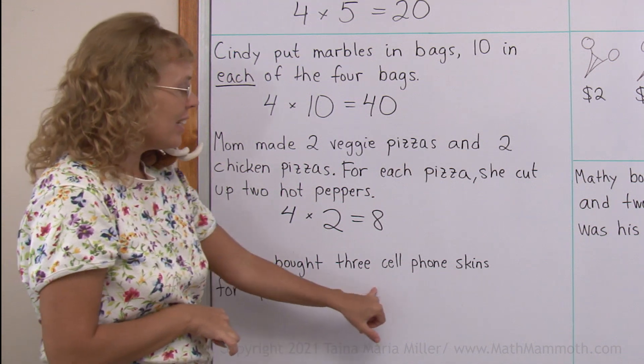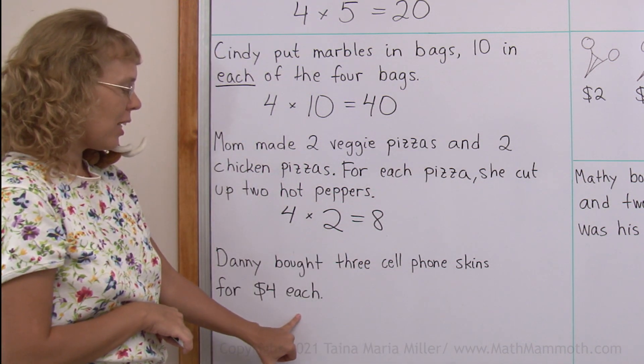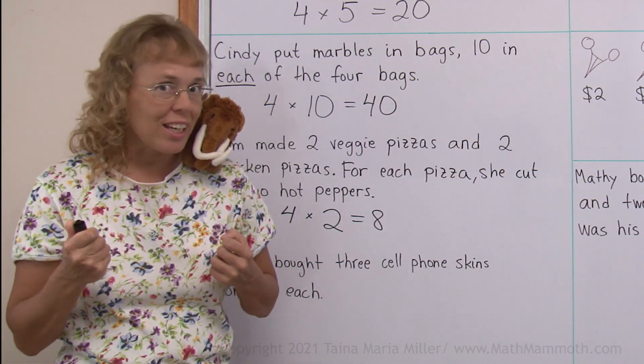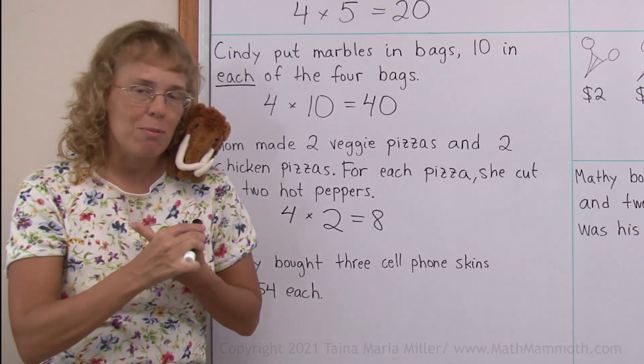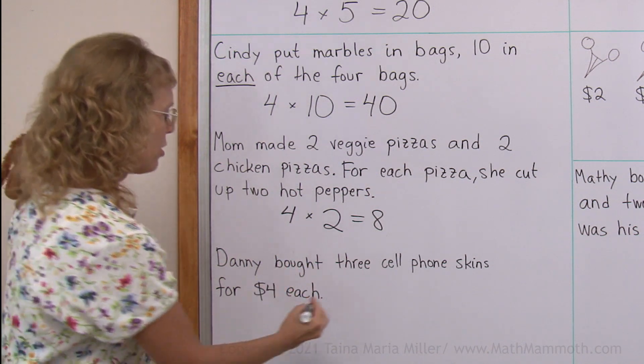Danny bought three cell phone skins for four dollars each. And what would be his total cost? We can use multiplication. There are three things, and they each cost the same amount. So we can multiply to find the total cost.